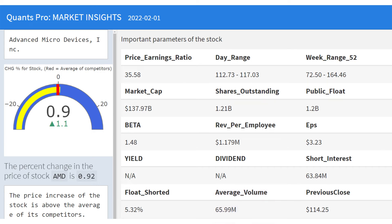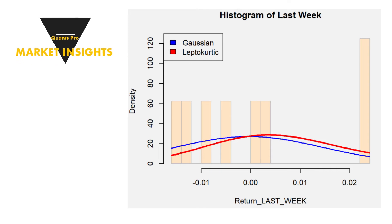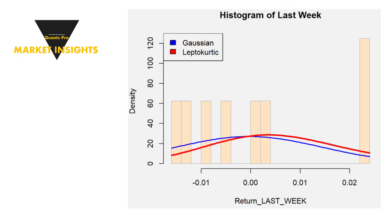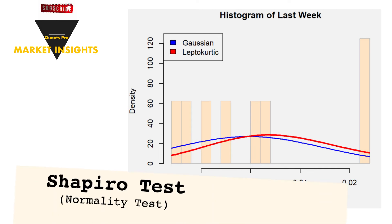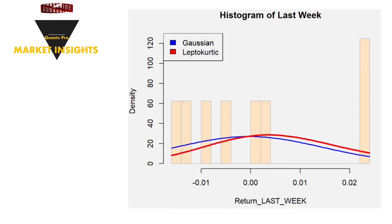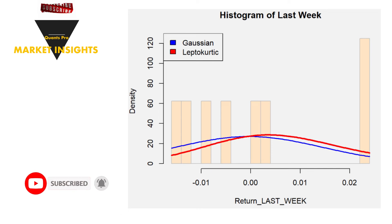Now let's look at the return performance of the company. Non-linear behavior is dominant in the stock markets, so examining whether the stock return is normally distributed also tests the existence of the leptokurtic theory, which includes excessive oscillations. The Shapiro test will be applied to test the normality of the stock. The Gaussian and leptokurtic features of the distribution of stock returns will be compared, and it is very important to determine the probability distribution that past return values fit.